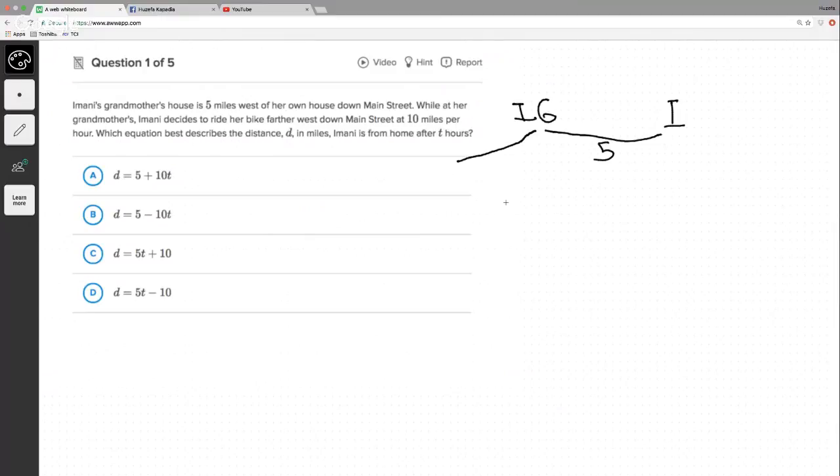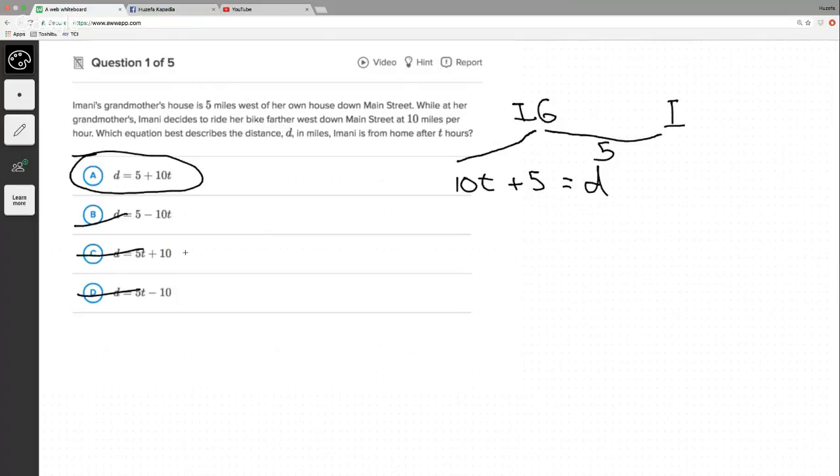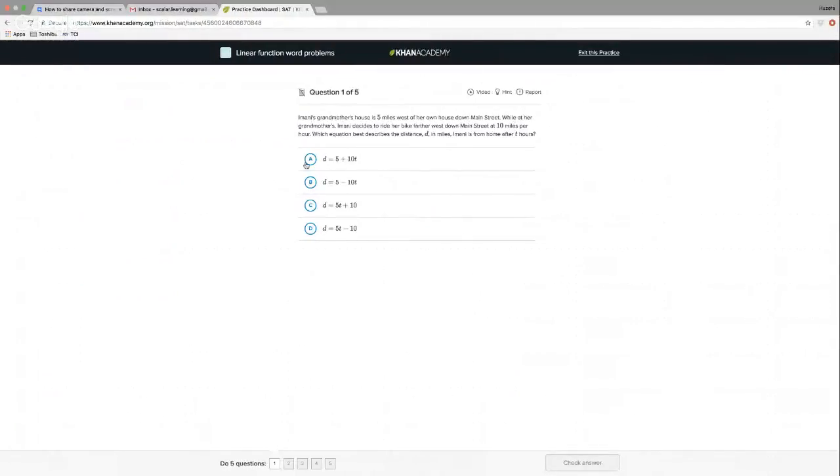So again, she's going 10 miles per hour. So how many hours times 10 is the distance she's have gone, plus she's already five miles away from her house because her grandmother's house is five miles away. So that's it. And it looks like A is going to be your answer. Here they're subtracting, no reason to subtract. And this is almost right, but they're switched. That one's wrong.